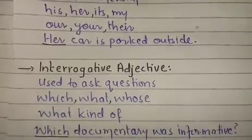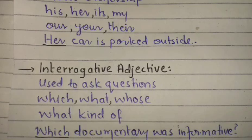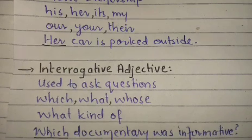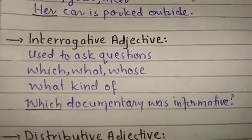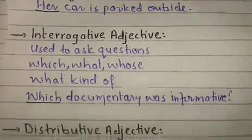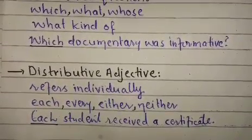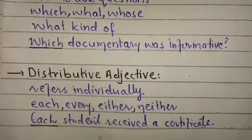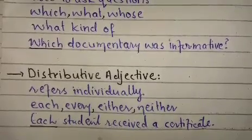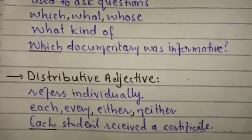Interrogative adjectives are used to ask questions. Words like 'which,' 'what,' 'whose,' and 'what kind of' are interrogative adjectives. For example, 'which documentary was informative?' A distributive adjective refers to individuals one by one. Words like 'each,' 'every,' 'either,' and 'neither' are examples of distributive adjectives.